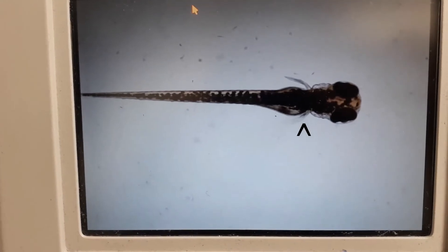So this is the eye. This is the fin. And this is the tail. It doesn't really look like an adult fish, does it?